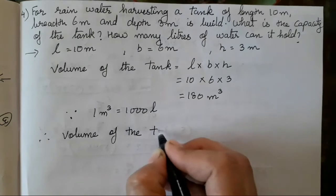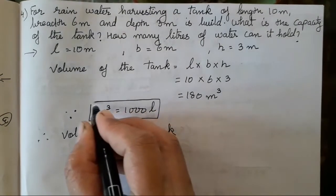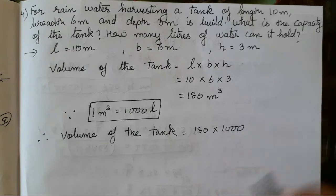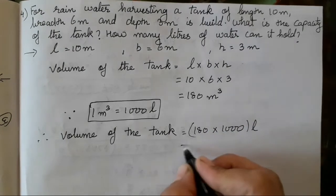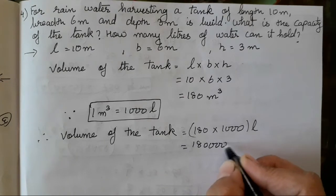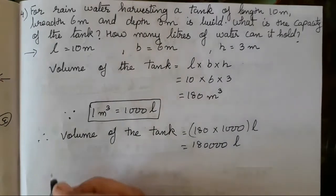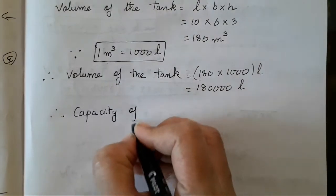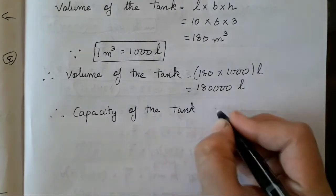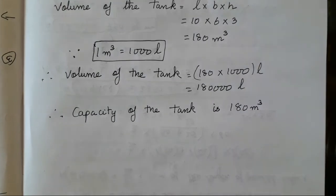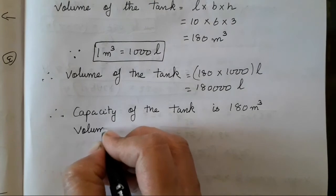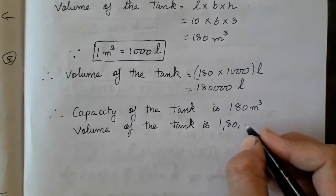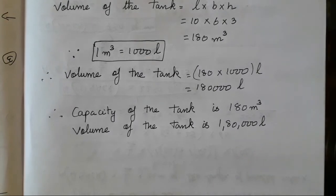Therefore, volume of the tank, this thing you have to mark so it will be visible to the teacher. 180 multiplied with 1000 liters. Only zeros you have to add, no need to do multiplication separately. The capacity of the tank is 180 meter cube, and volume of the tank is 180,000 liters. Got it children? It's very easy to solve.